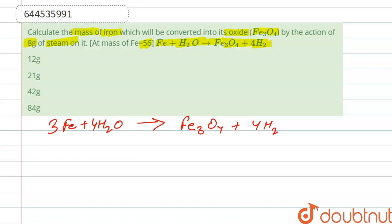If molecular mass of iron is given, which is 56, we see that 3 into 56, that is 168 grams, and 4 into molecular weight of water, that is 18, which is 72 grams. So 72 grams of steam react with 168 grams of iron.